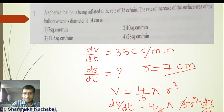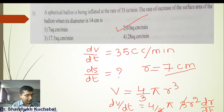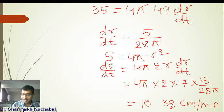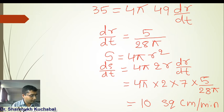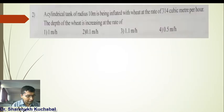We observe that the second option is correct. The answer is 10 cm² per minute for dS/dt.